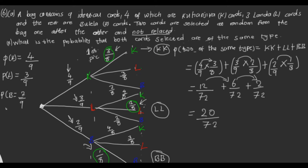We can simplify 20/72. Dividing numerator and denominator by 2 gives 10/36, and dividing again by 2 gives 5/18. So the probability of picking two cards of the same type is 5/18.